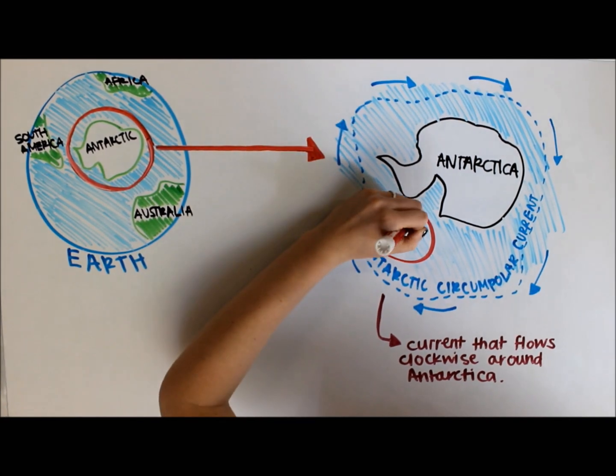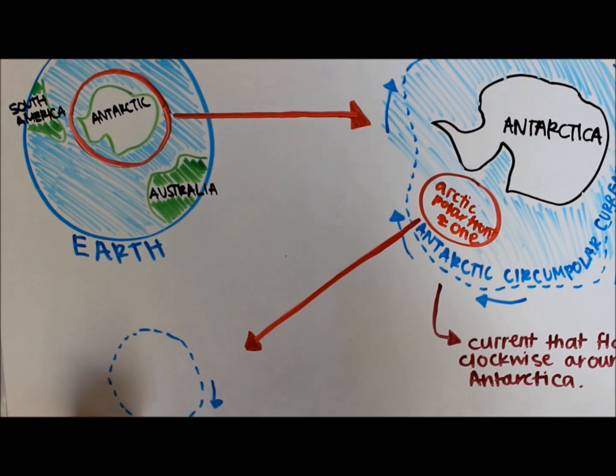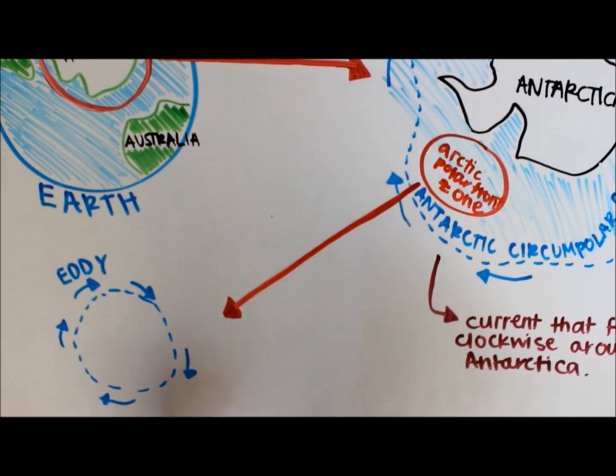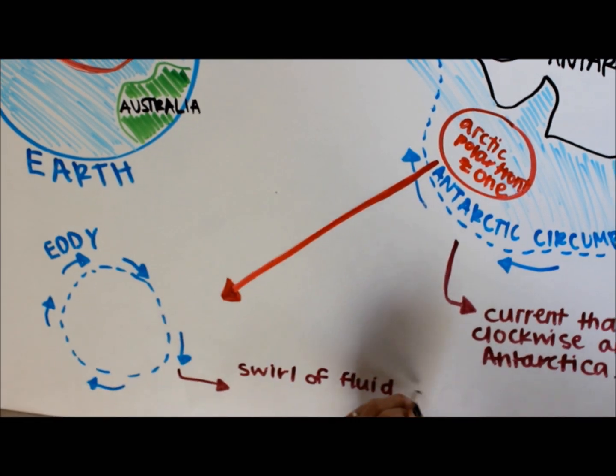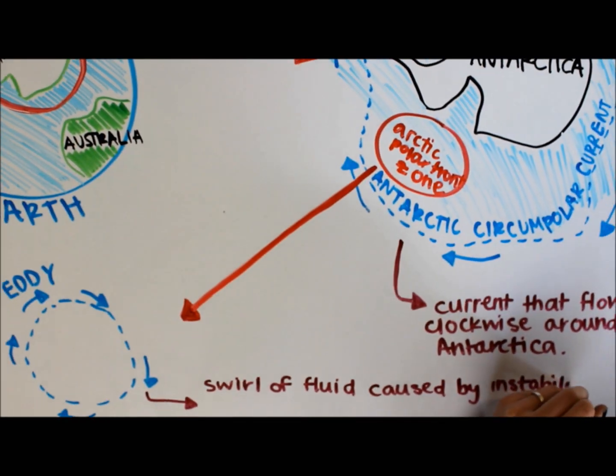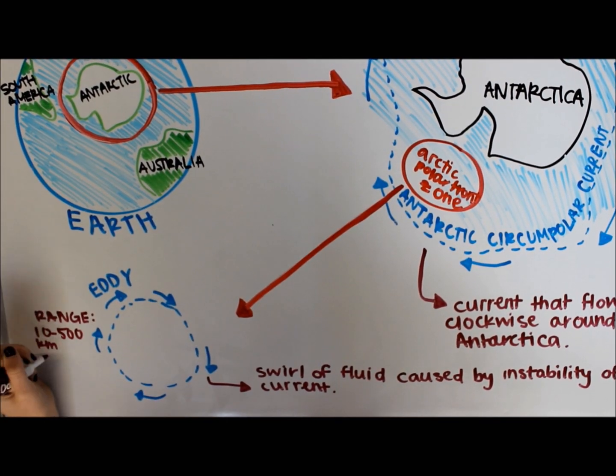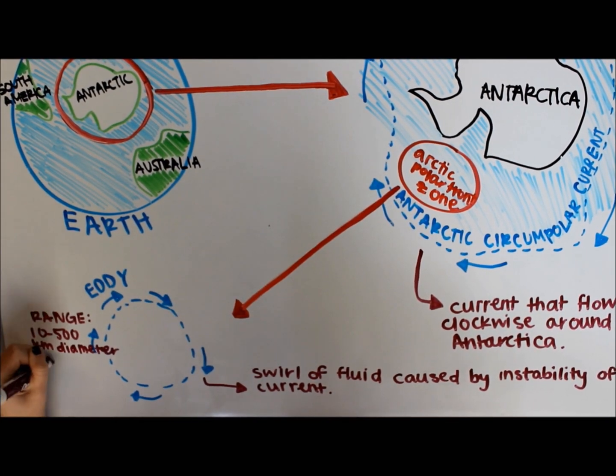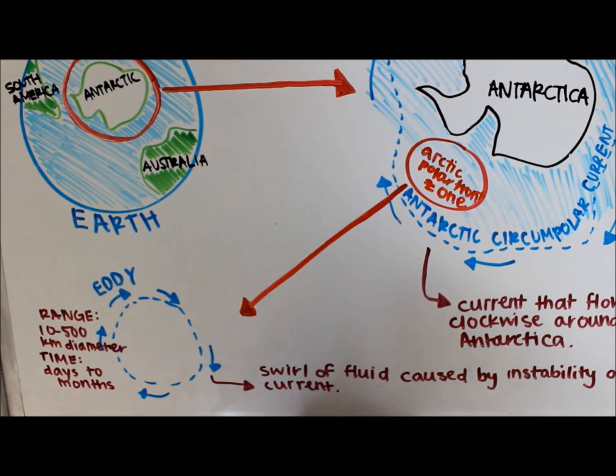The Antarctic Polar Front Zone is an area where the polar and tropical air masses mix and transition. Eddies are a normal occurrence here. An ocean eddy happens when current instabilities lead to the swirling of fluids. The mesoscale eddy can be from 10 to 500 kilometers in diameter and can remain present for days or months at a time.